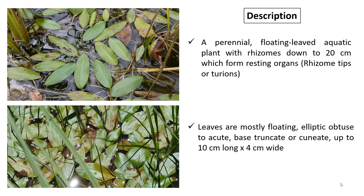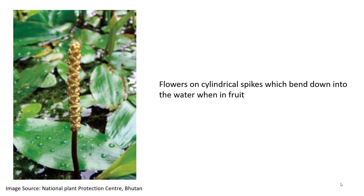It is a perennial floating-leaved aquatic plant with rhizomes down to 20 cm, which form resting organs also known as rhizome tips or turions. The leaves are mostly floating, elliptic obtuse to acute, with a base that is truncate — appearing as if cut off at the tip — or cuneate, meaning triangular at the base and tapering to a point. It can grow up to 10 cm long and 4 cm wide. It flowers on cylindrical spikes which bend down into the water when fruiting.